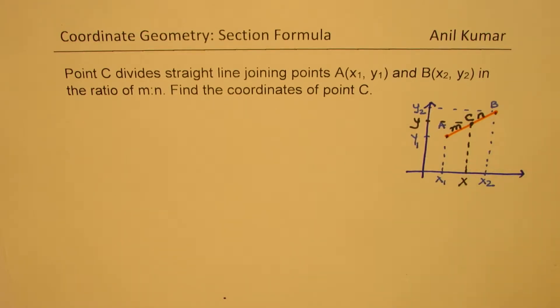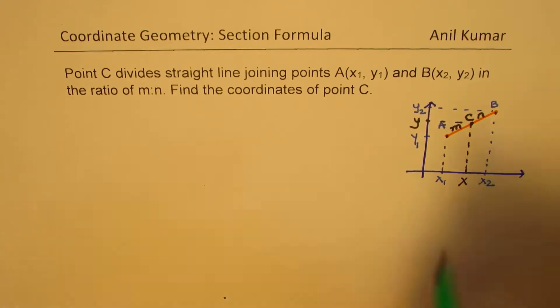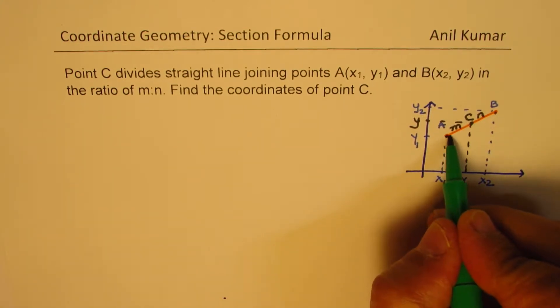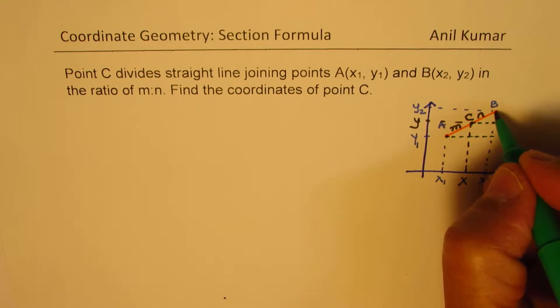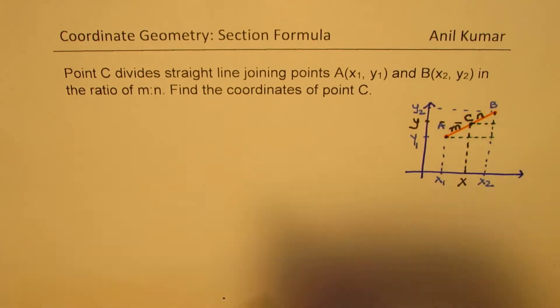Now, in this particular case, you can see that if I form a triangle by drawing a line parallel to x axis from A and C, as you have seen here, we do form two triangles.